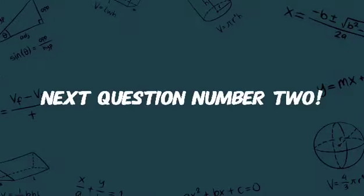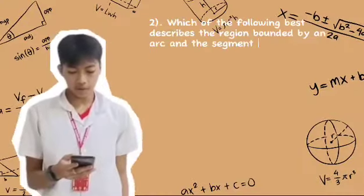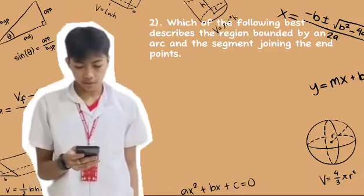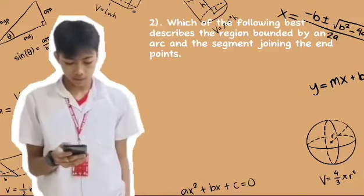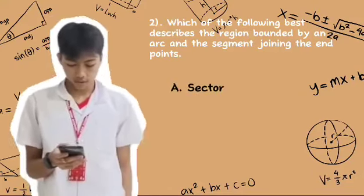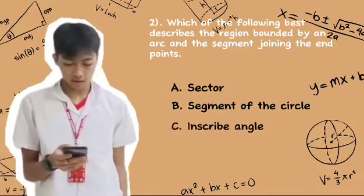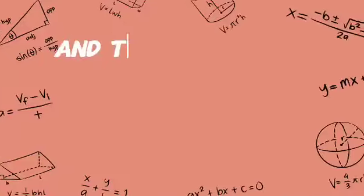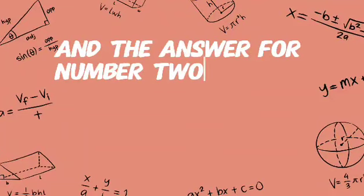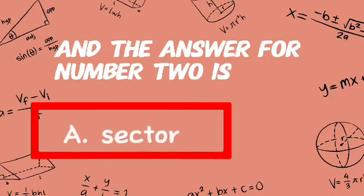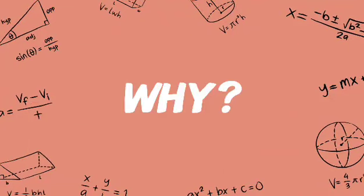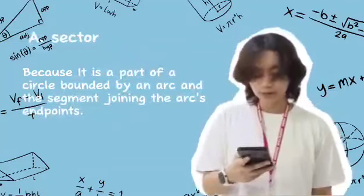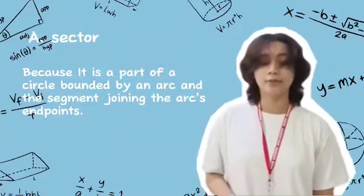Next question. Which of the following best describes the region bounded by an arc and the segment joining the endpoints? A, sector; B, segment of the circle; C, inscribed angle; D, central angle. The answer for number 2 is B, segment of the circle. Because it is a part of the circle bounded by an arc and the segment joining the arc's endpoints.